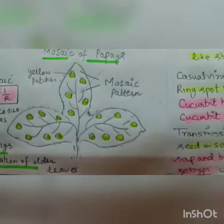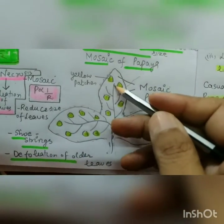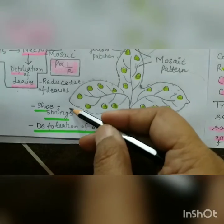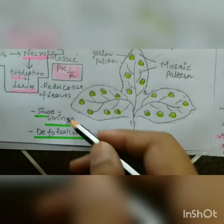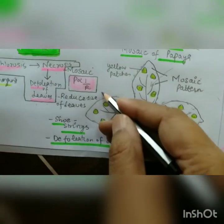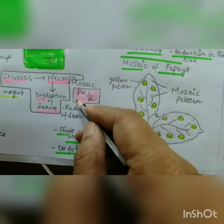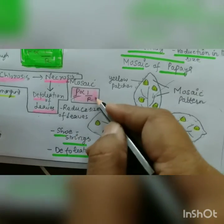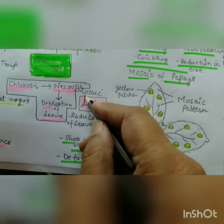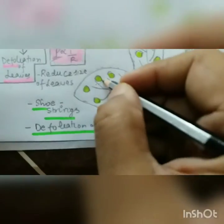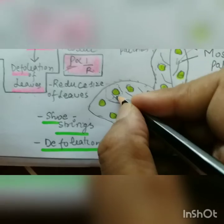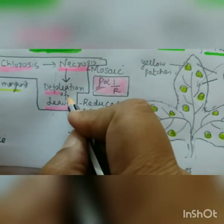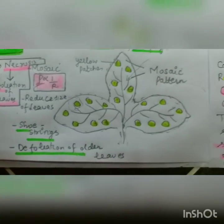To summarize: because of these yellow patches, we have the mosaic pattern. At later stages, leaves are reduced in size, then defoliation of older leaves occurs and leaves take the shape of shoestrings. The main purpose is that surface area decreases, photosynthesis decreases, and respiration increases. Where photosynthesis decreases and respiration increases, that area becomes chlorotic — and from chlorosis to necrosis, then defoliation of leaves and ultimately the death of the plant.